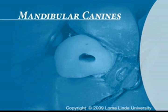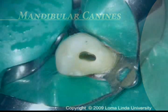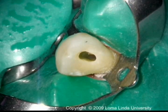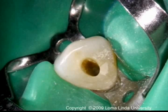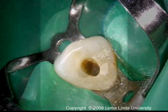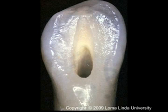Mandibular Canines. The outline form for the access to the mandibular canine is very similar to that of the maxillary canine. The outline form is ovoid. In cases of attrition, the axis is extended towards the incisal edge.